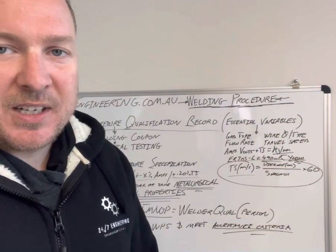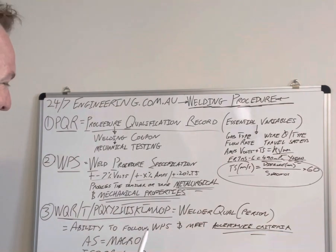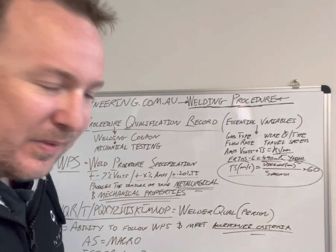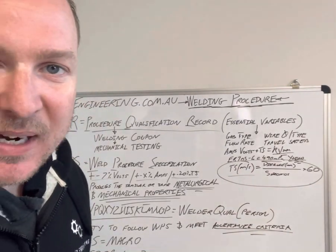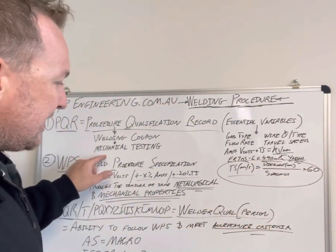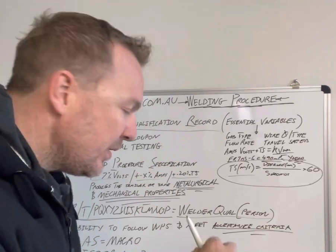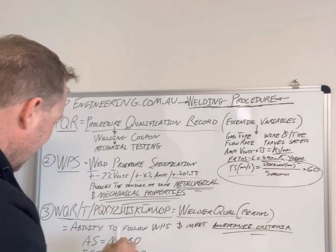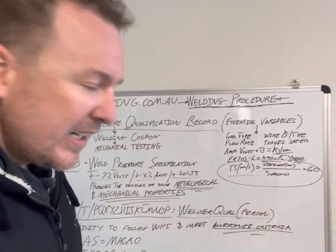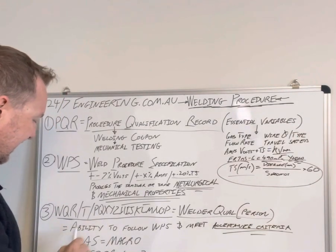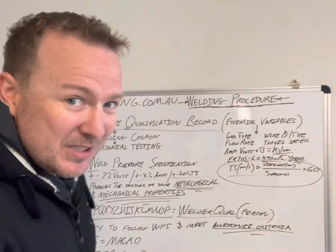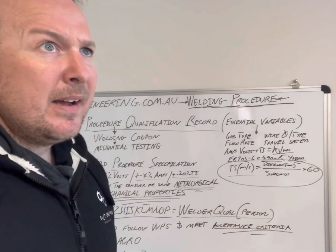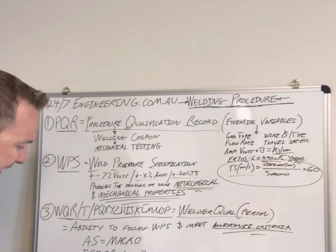There are a lot of variables — some you can break, some you can't. Talk to your welding supervisor or call us. The next one is the WQR — everyone has their own version of the name: WQT, WPQR. What it is, is the person. After the WPS exists, you get all the welders in the workshop — whoever you want — to qualify to that WPS. This test is the ability to follow the WPS and meet the acceptance criteria of the standard.